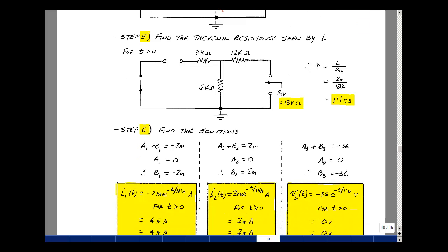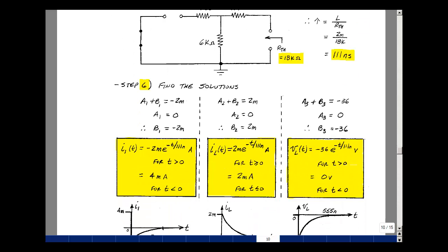So I can put together the solution of my three variables. A1 plus B1 was minus 2 milliamps. A1 was 0, so B1 is minus 2 milliamps. So I1 is equal to minus 2 milli E to the minus T over tau.